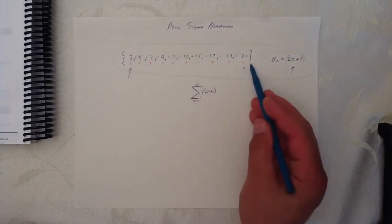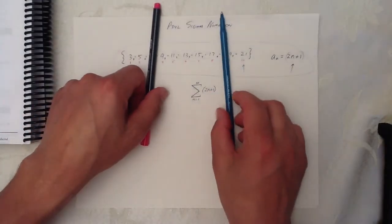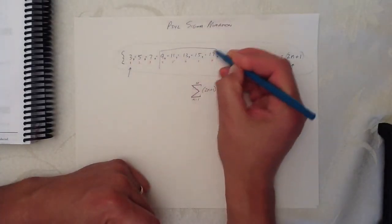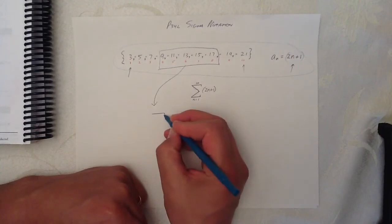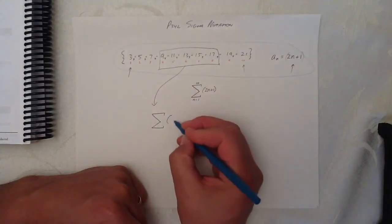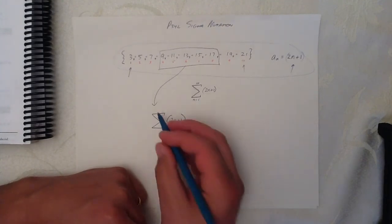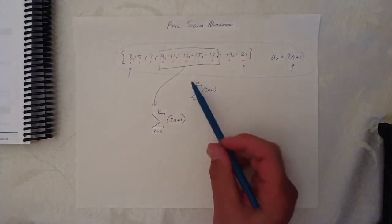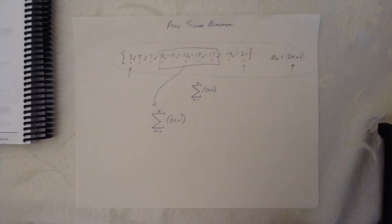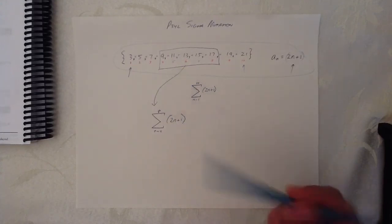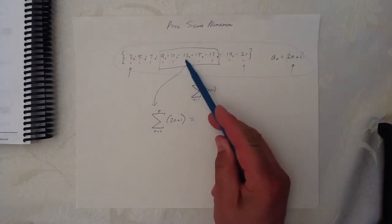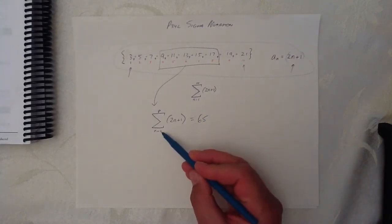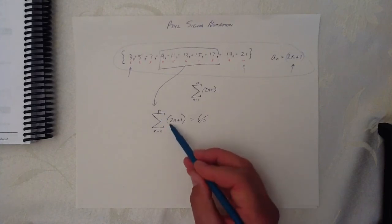If we didn't want to add all of these up — only a portion, maybe the fourth through the eighth term — we would write it slightly differently. Same sigma, same formula to calculate it, but instead we would write n equals 4 to 8. That shows it's only that portion we're adding up. That equals 9 plus 11 is 20, then 33, 48, 65. So from the fourth term to the eighth term using this formula to calculate.